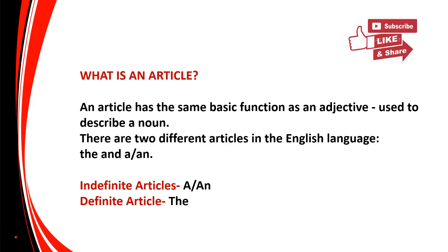You will use indefinite articles if you are not specific. For example, 'Give me an umbrella' — you are not specific, you are asking for any umbrella. Now see the definite article: 'Give me the red umbrella.' You are very specific. That is the difference between the usage of indefinite articles and the definite article.